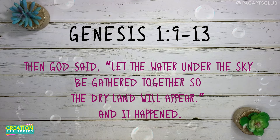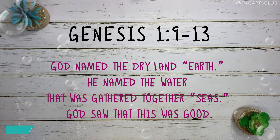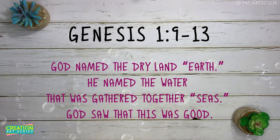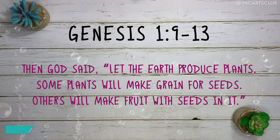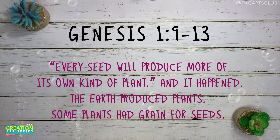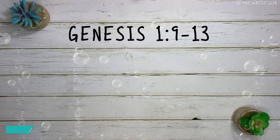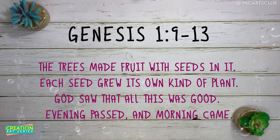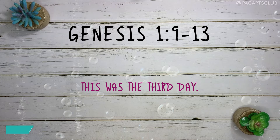Genesis 1, verses 9 to 13: Then God said, let the water under the sky be gathered together so that dry land will appear — and it happened. God named the dry land Earth, and the gathered water He named Seas. God saw that it was good. Then God said, let the earth produce plants — some will make grain for seeds, others fruit with seeds in it, every seed producing its own kind. The earth produced plants, and God saw that all this was good. Evening passed and morning came — this was the third day.